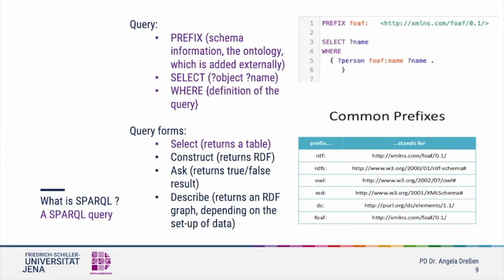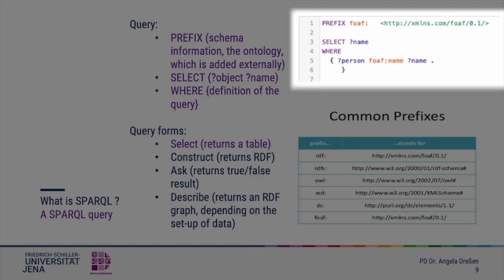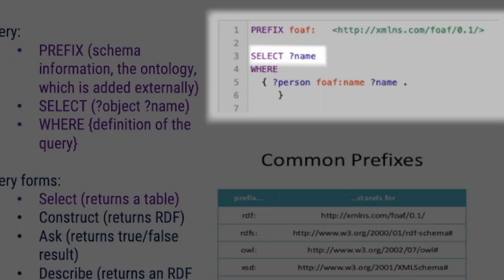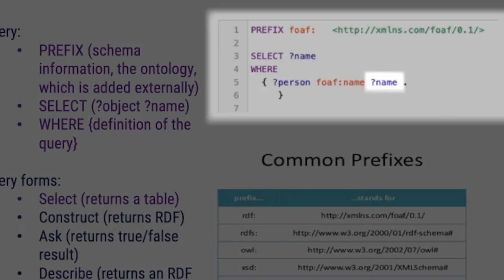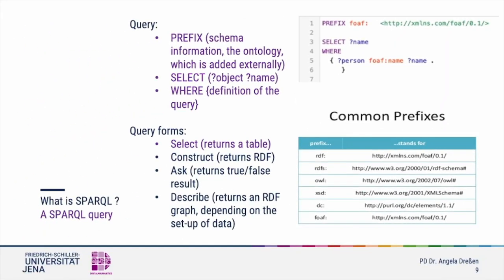Let us look at a simple query. It consists of three basic entry categories: prefix, select and where. The prefix lists the ontology we are querying with its shortcut and its URL — in this case it relates to FOAF. Select lists the results we would like to know about; in this case, it is the name, and it must start with a question mark. Under Where, we build the query within curly brackets. The triple is built of a person with a question mark as subject, the ontology entry as predicate, and the object with a question mark. All three words need to be part of the FOAF ontology listed above.